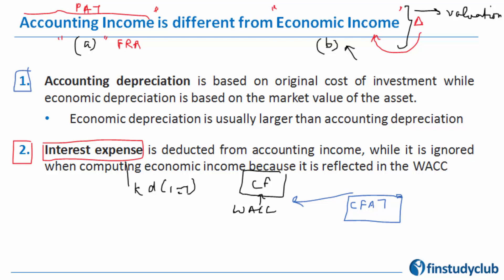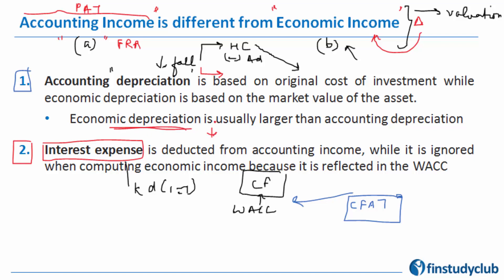The second difference is in the amount of depreciation considered, and that's where confusion tends to crop in. Depreciation fundamentally is the fall in value. As an accountant, I am focused on the historical cost recorded in my books, so I always depreciate the historical cost to arrive at net book value or amortized cost. But as an economist, I have to be linked to the market. Economic depreciation is the fall in the market value of the property, plant and equipment or project. So while accounting depreciation works on book value, economic depreciation works on market value.